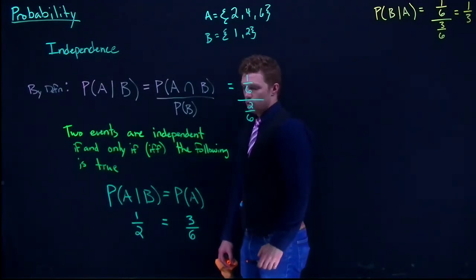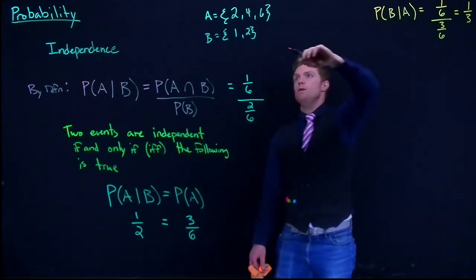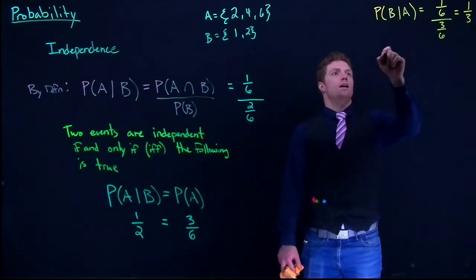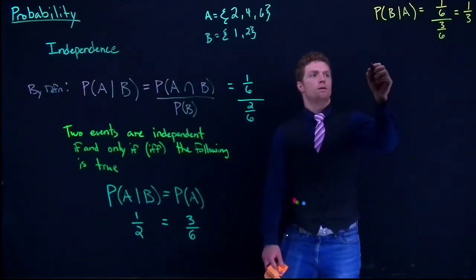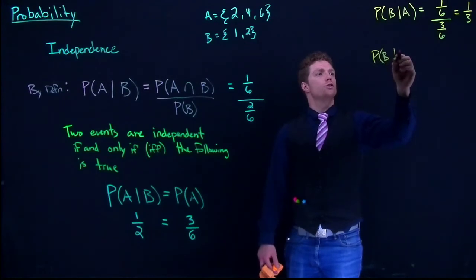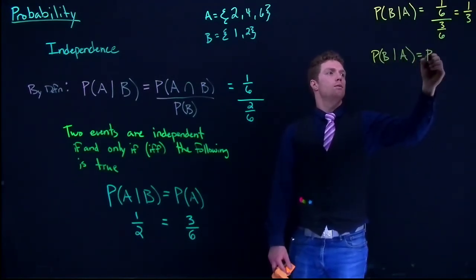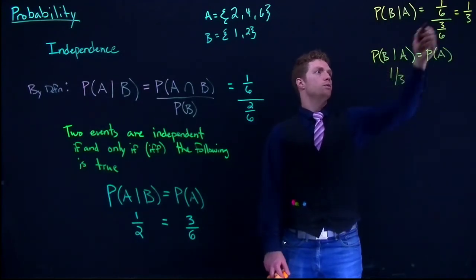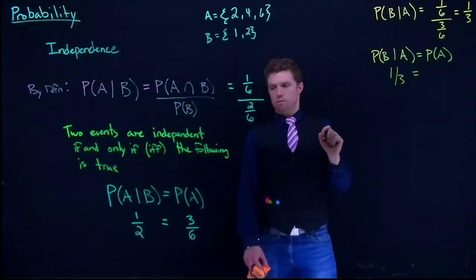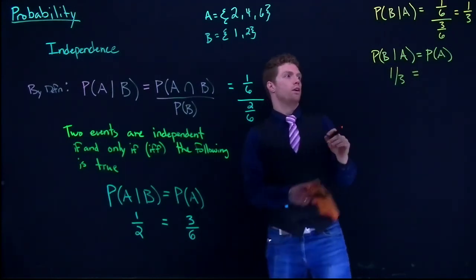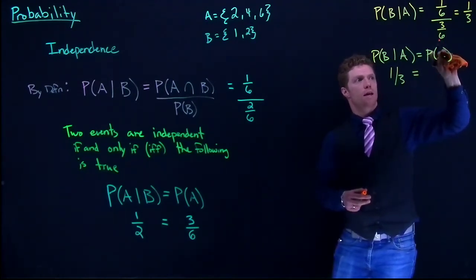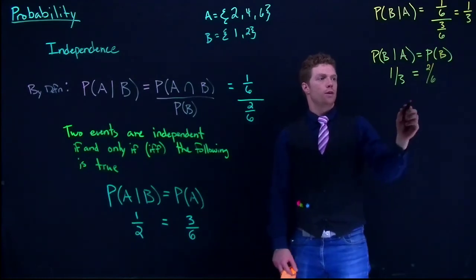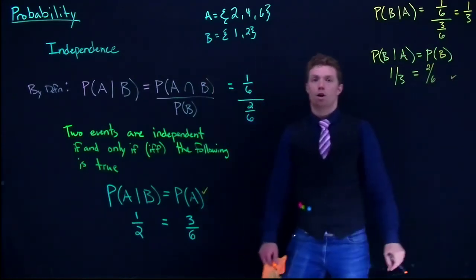Now we check: is the probability of B given A equal to the probability of B? The probability of B given A is 1/3, and the probability of B is 2/6, which also equals 1/3. They match — so yes, A and B are confirmed independent from one another. If we find independence in one direction, we will find it in the other direction as well.